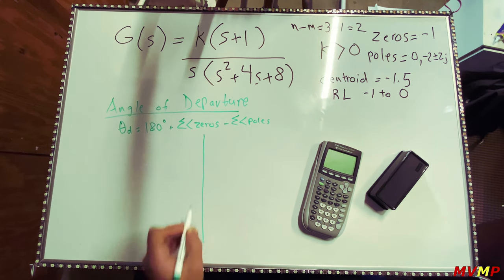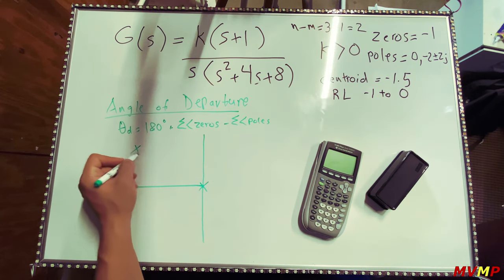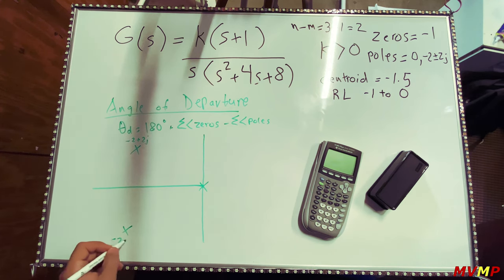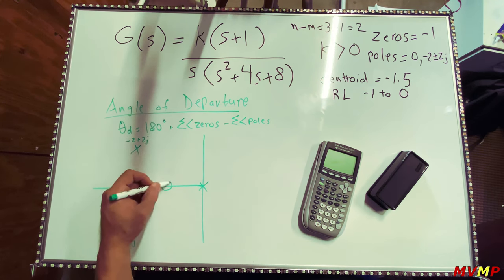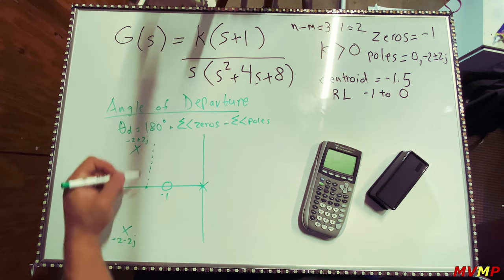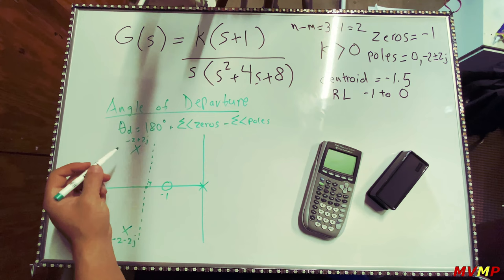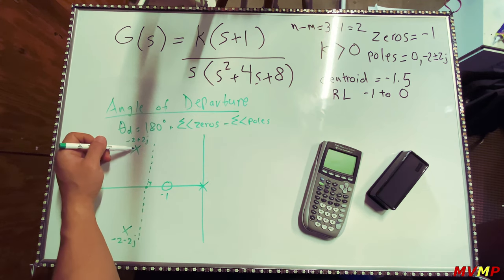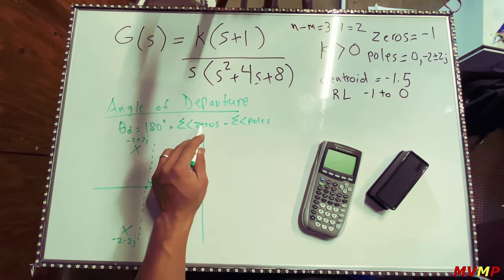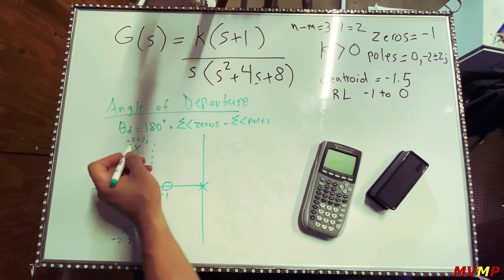On the graph we have a pole at zero, poles at negative 2 plus 2j and negative 2 minus 2j, a zero at negative one, and the centroid at negative 1.5 with 90 degrees asymptotes. To find the angle of departure, you look at one of the complex poles and compute all angles with respect to that pole. Choosing the pole at negative 2 plus 2j, the angle to the zero is: subtract the zero location, giving minus 1 plus 2j.